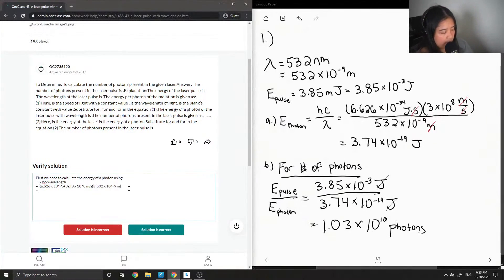This equals 3.74 times 10 to the negative 19 joules. For number of photons, E-pulse over E-photon equals...